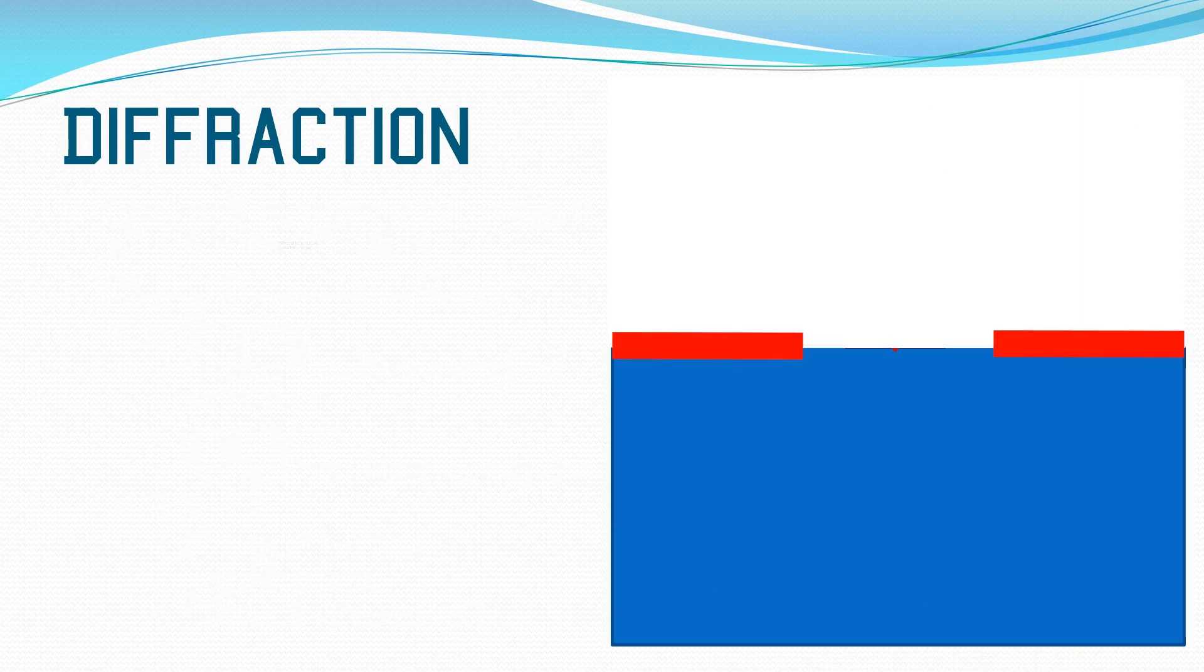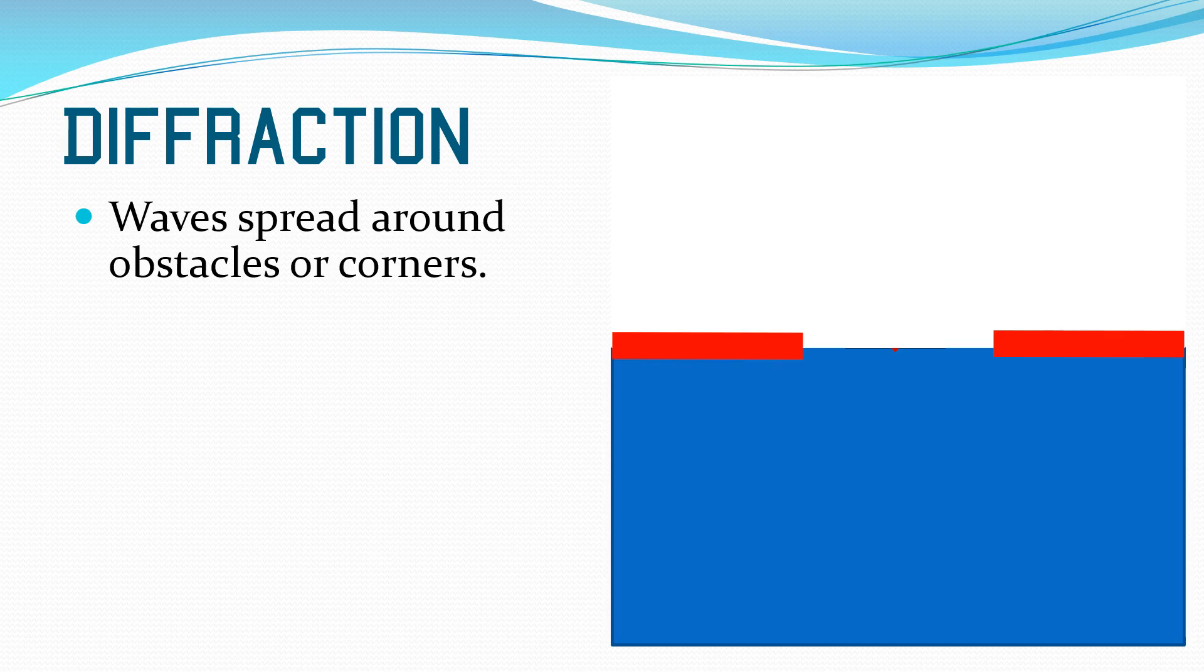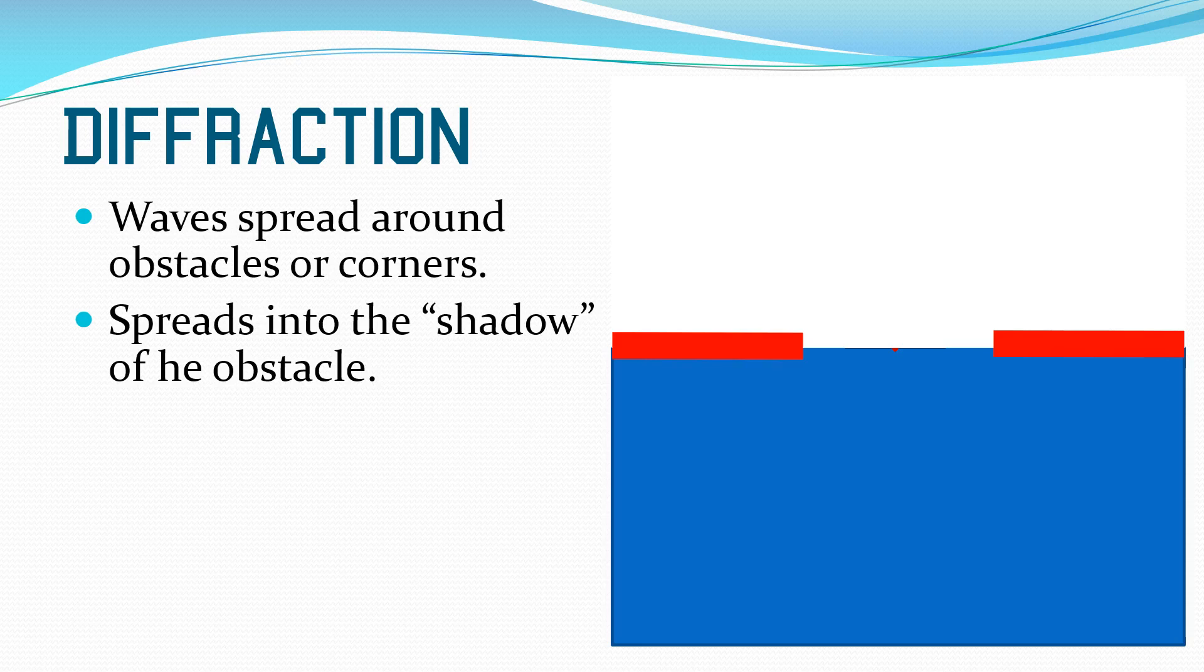Waves can also diffract. This is when they spread around obstacles or corners. We think of this as waves bending around obstacles. It spreads into the shadow of the obstacle.